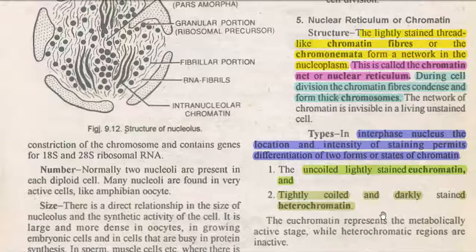However, the other region is tightly coiled and closely associated with histone proteins. These are darkly stained and highly inactive — they are not involved in the transcription process. That region is referred to as the heterochromatin region.